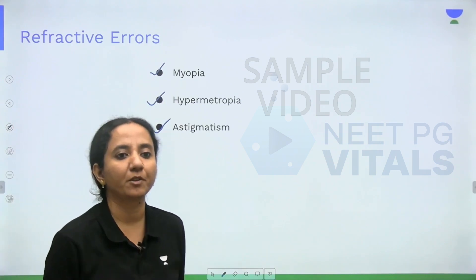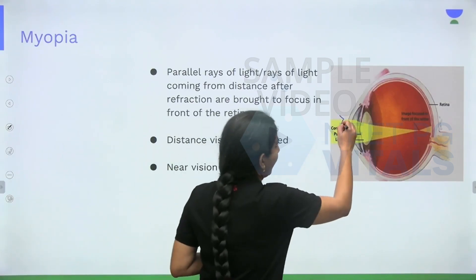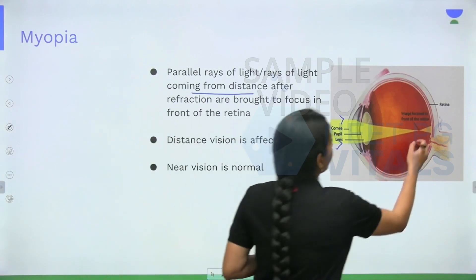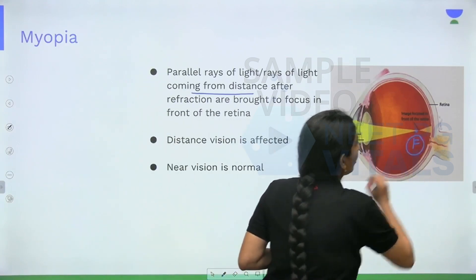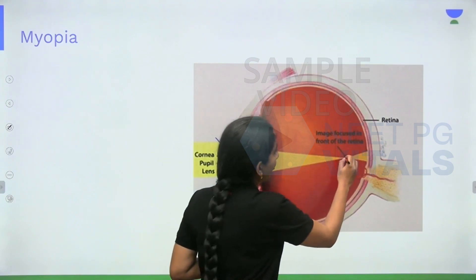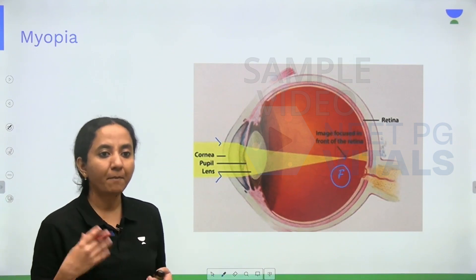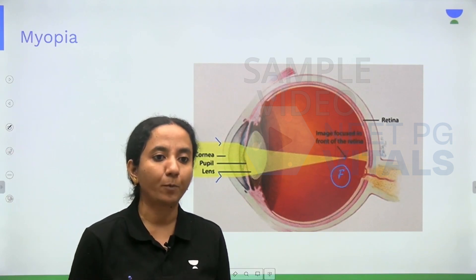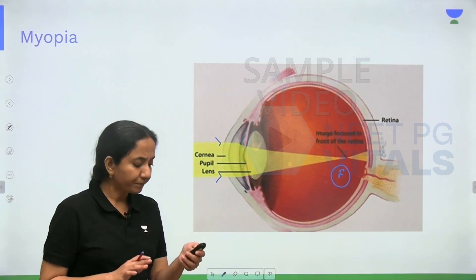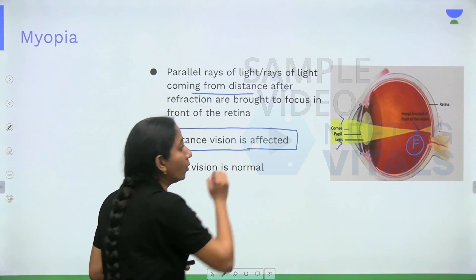Let us start with the clinical features of myopia. In myopia, the parallel rays of light coming from a distant object, after refraction, are brought to focus at point F which is in front of the retina. So in an uncorrected myopic patient, the distant rays are not meeting on the retina — they are meeting in front of it. Therefore, in myopia, the distance vision is affected and will not be good.